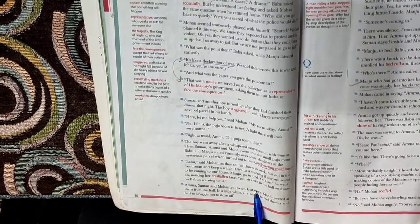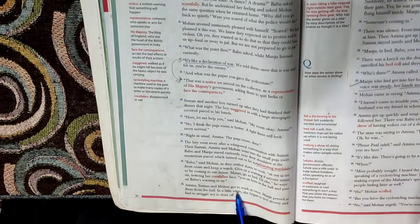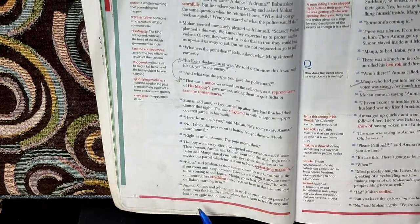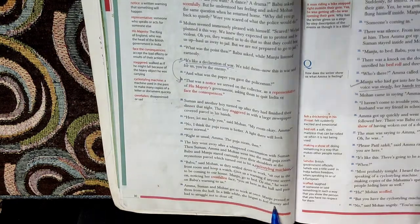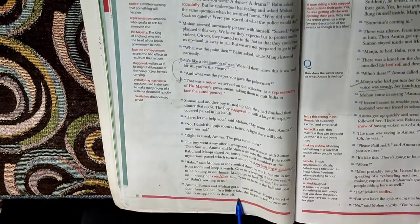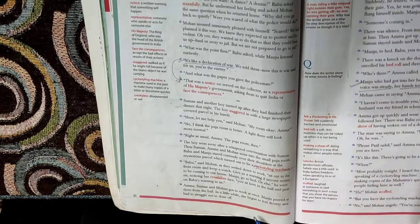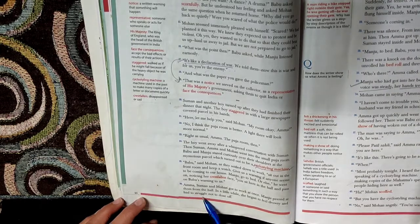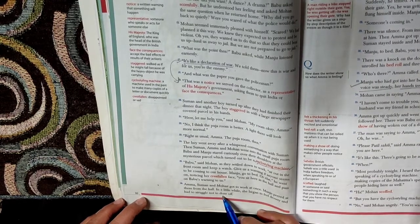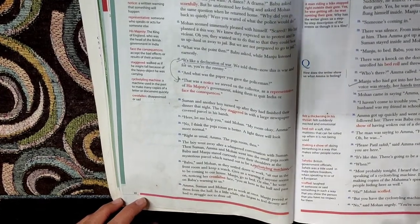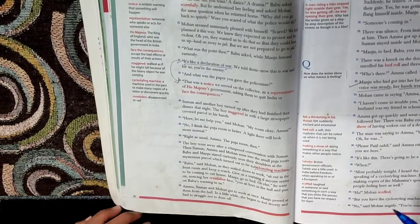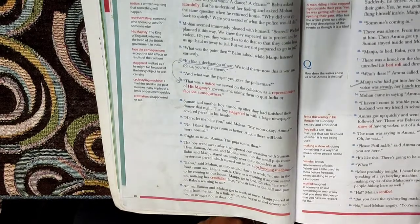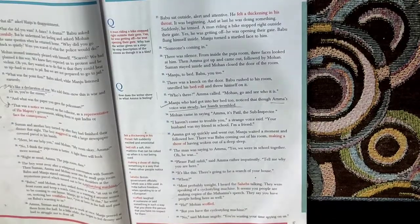Amma, Suman and Mohan got to work at once. Got to work at once means they are now opening the parcel. Manju peered at them from the hall. In a little while, she began to feel drowsy and had to struggle not to doze off. Drowsy means she is about to sleep. She is feeling sleepy and had to struggle not to doze off. Doze off means going into deep sleep. Why? Because she has to give information that Babu will give to her.